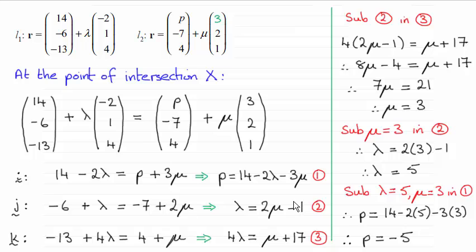So by substituting for lambda into equation 3 I can establish what mu is and you can see I've done it here. Mu turns out to be 3, and then I can substitute mu equals 3 back into equation 2 and work out what lambda is, and it turns out to be 5.